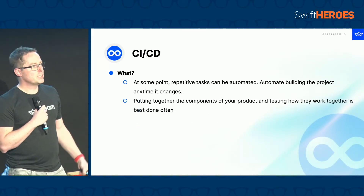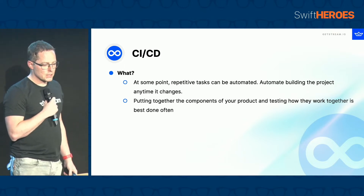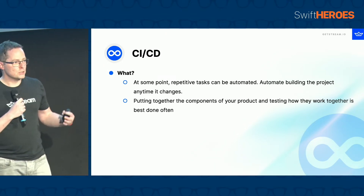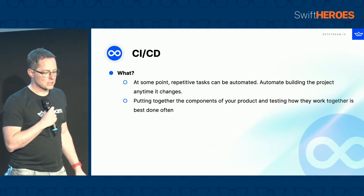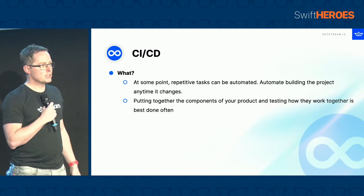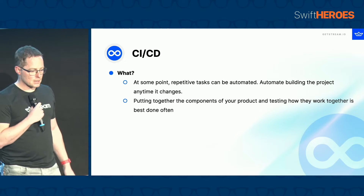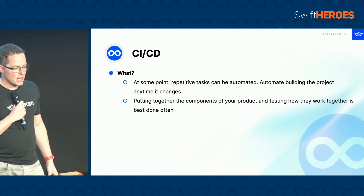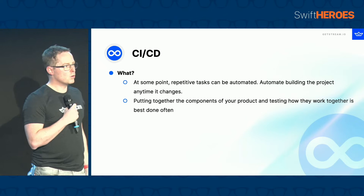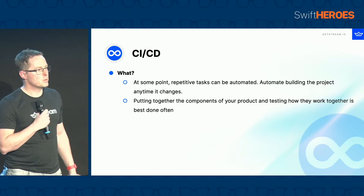On top of that, many version control systems provide CI/CD — continuous integration and continuous delivery. At some point you want to automate a repetitive task. Why would you do something manually if you can automate it? Something you can automate is something you cannot make mistakes with. GitHub Actions, for example, is quite good at allowing you to execute tasks, putting together the components of your product, and testing how they work together. The testing, integration, and deployment of your product is very easy and worthwhile to do with your build infrastructure.